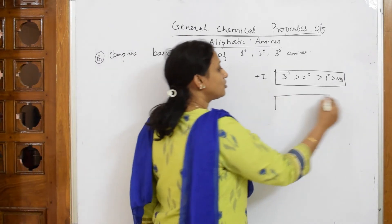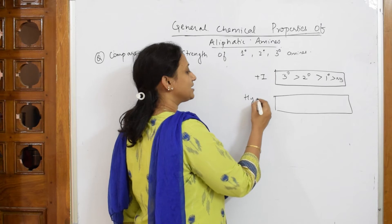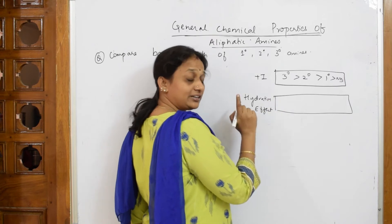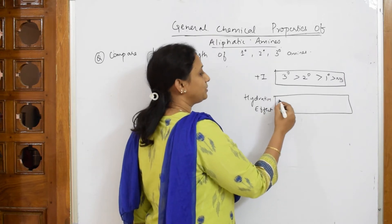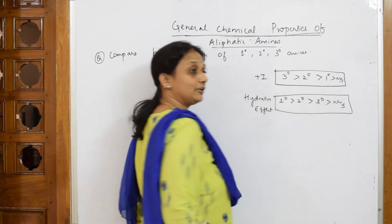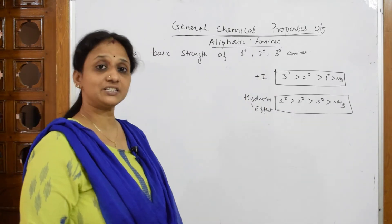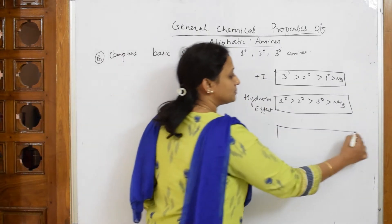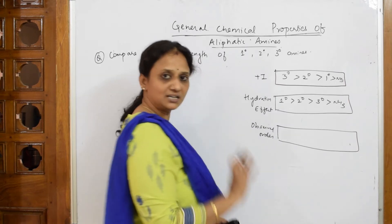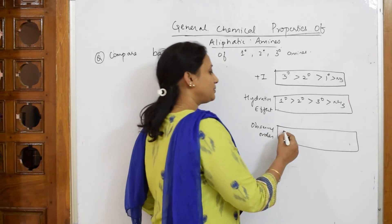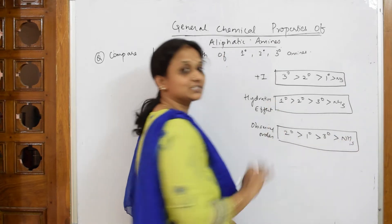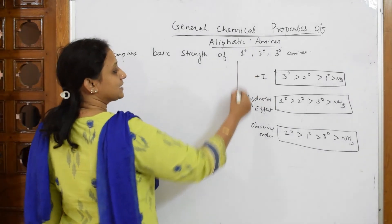There is one more concept I am going to explain: the hydration effect. In the hydration effect, the order would be primary greater than secondary greater than tertiary greater than ammonia. When I combine both effects — the +I effect and the hydration effect — the actual observed order is secondary greater than primary greater than tertiary greater than ammonia.